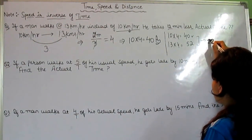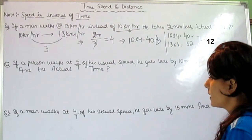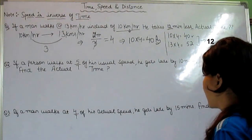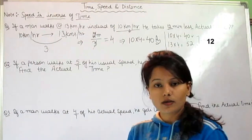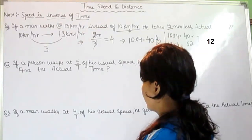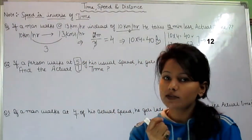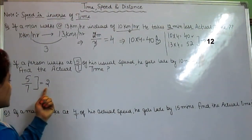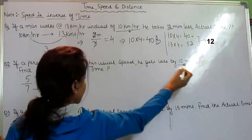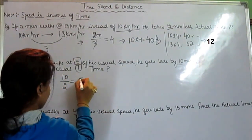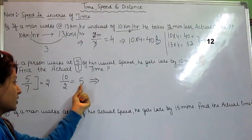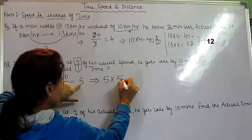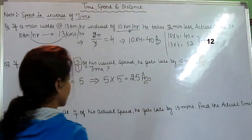Next question: if a person walks at 5/7 of his usual speed, he gets late by 10 minutes — find the actual time. Whenever you see a fraction, apply this small trick: we are given 5/7, the gap between numerator and denominator is 2. Divide the time given — 10 — by the gap of 2, we get 5. Then multiply this 5 with the numerator, which is 5, giving us 25 as the answer.